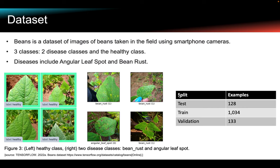Let's first take a look at the dataset. The Beans dataset from TensorFlow will be used. It contains images taken in the field using smartphone cameras. The images can be divided into three classes: two disease classes and the healthy class. There are 1034 images in the train set and 128 images in the test set. Each image is a colored image of size 500x500 pixels.